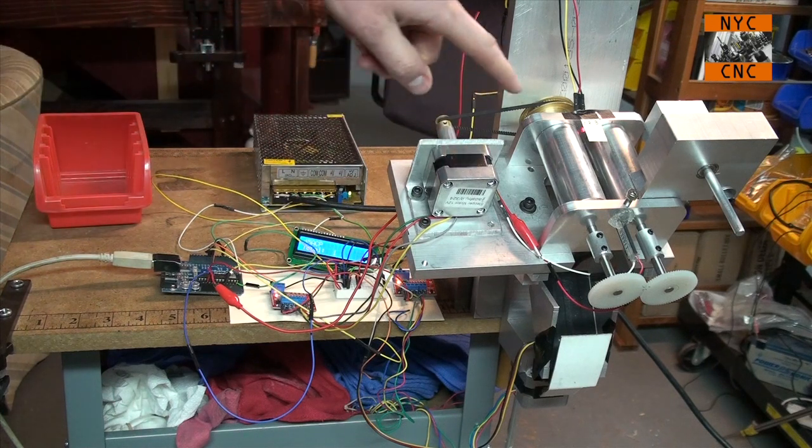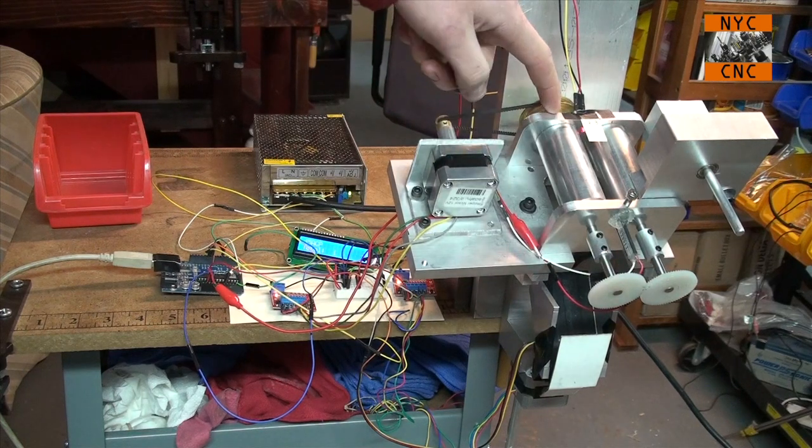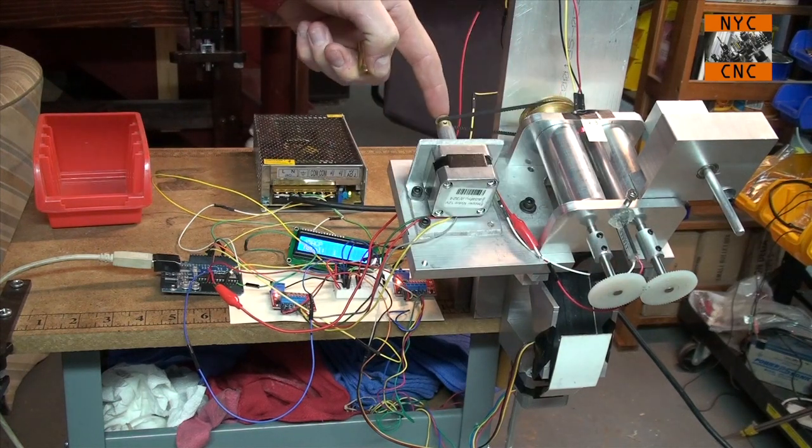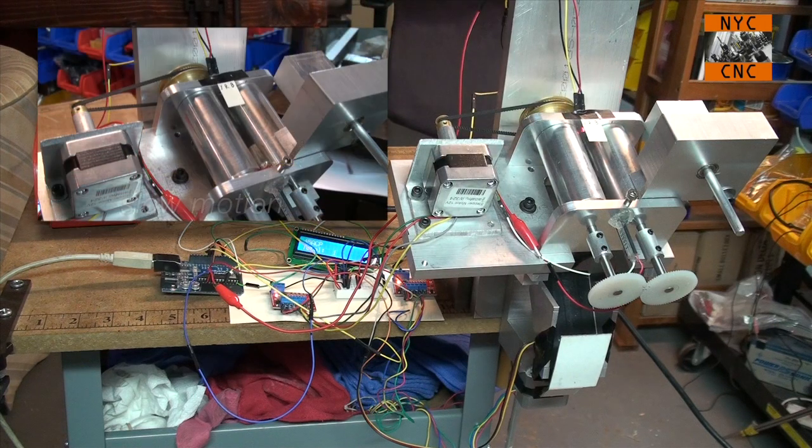The way it works is there are these two cams here, they're geared together and they're on an offset shank. As the stepper motor rotates them, the distance between the two rollers expands.